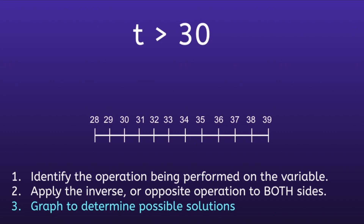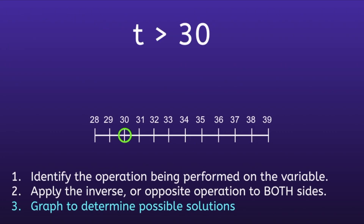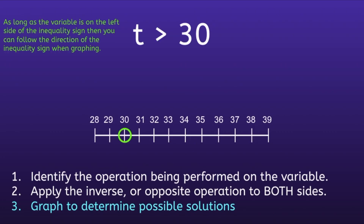Step 3: Graph to determine possible solutions. Since we have a greater than sign, we use an open circle because 30 is not included as a solution. We place that open circle on 30 on the number line. Since t is on the left side of the inequality sign, we follow the direction of the sign when graphing — it points to the right, so the arrow also points to the right. Any number to the right of 30, but not including 30, is a solution.